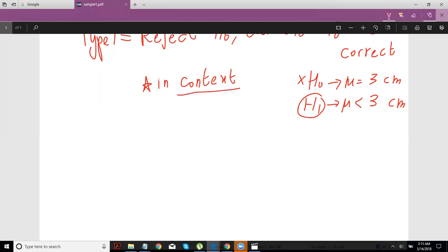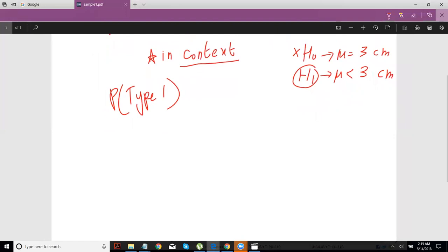The second type of question they can ask and the more common one is basically the probability of committing a type 1 error. And this is extremely easy in the case of a type 1 error because this is simply equals to your significance level.